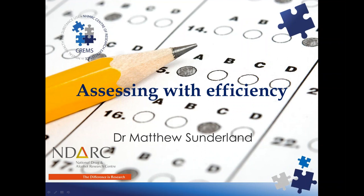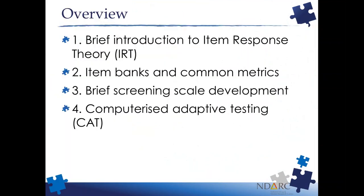If you have any questions as I go through, or if I'm talking nonsense you don't understand, please write it down and we can talk at the end. A quick overview: I'll give a brief introduction to item response theory, then talk about how we can use IRT to form item banks and common metrics. I'll then cover developing brief screening scales administered in a static way, and finish up by talking about how IRT can be used to develop adaptive tests, which are highly efficient ways of measuring something without losing as much precision as when administering short scales statically.